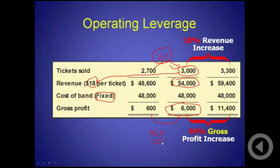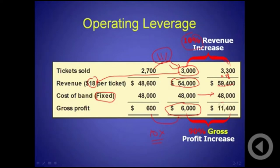If we further increase the number of tickets sold by 10%, from 3,000 to 3,300 — 3,300 tickets times $18 per ticket gives revenue of $59,400. The fixed cost remains the same at $48,000, so now we are at $11,400 gross profit. By increasing the number of tickets by only 10%, we increased gross profit by 90%.